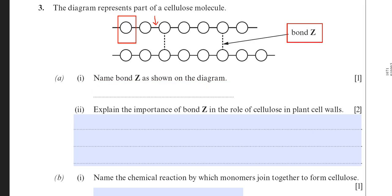So the name of bond Z is a hydrogen bond. This hydrogen bond is a very important bond in cellulose. It gives many of the properties that you need to know of in cellulose. I've typed in the answer there, hydrogen bond.